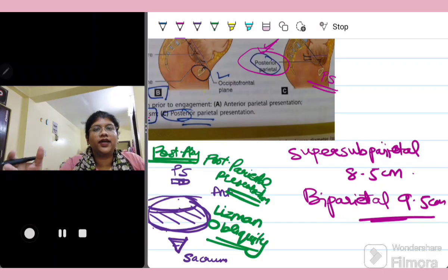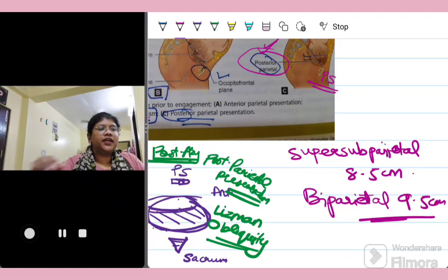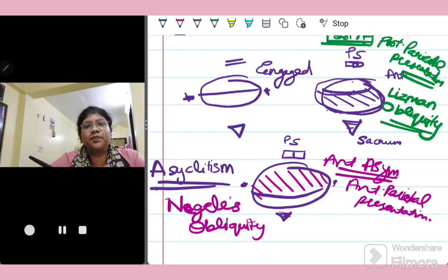So this is why asynclitism has been found in a normal labor. Remember that asynclitism is hence beneficial for the engagement of head, but marked or you can say persistent asynclitism can lead to cephalopelvic disproportion. So that posterior parietal presentation is more commonly seen in primigravida female because they have a good uterine tone.